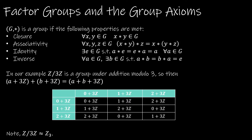The important thing to remember is that these three elements form a group. Looking at the group axioms — closure, associativity, identity, and inverse — we know the operation is addition mod 3. For example, (1+3Z) + (2+3Z) = 3+3Z, but mod 3 that's 0, so we get 0+3Z, which is just 3Z. We can see by the table that it is closed.